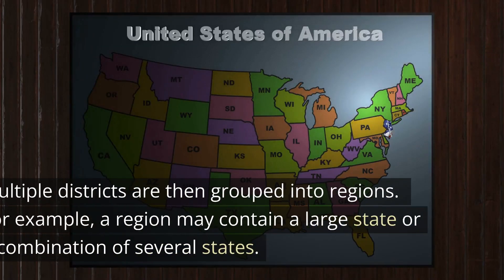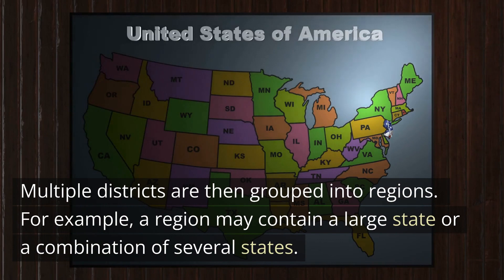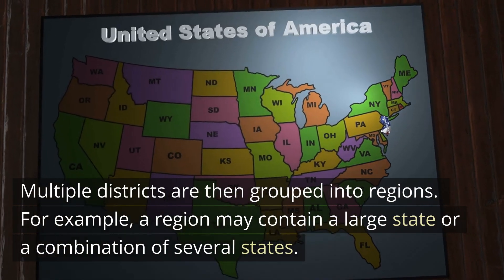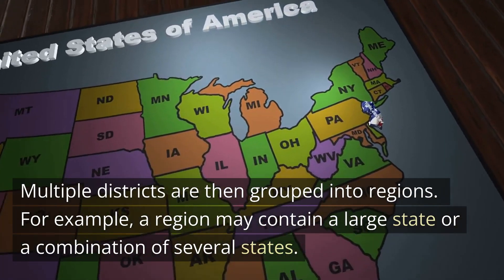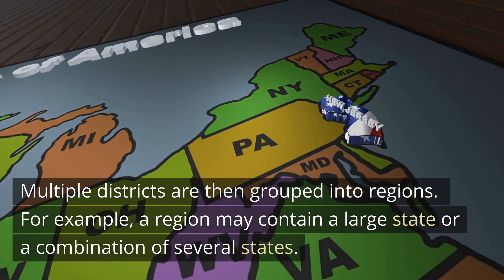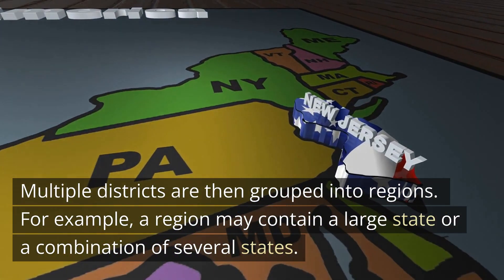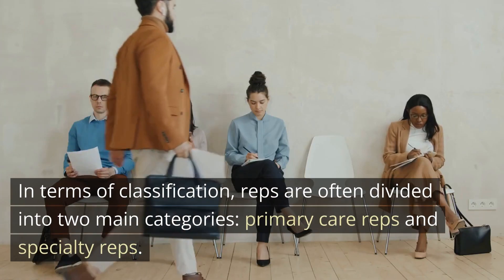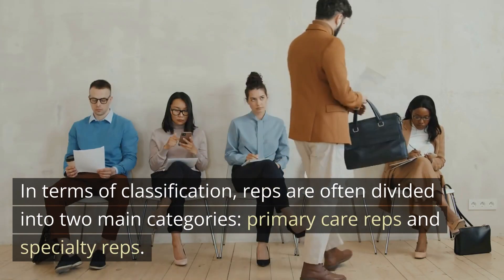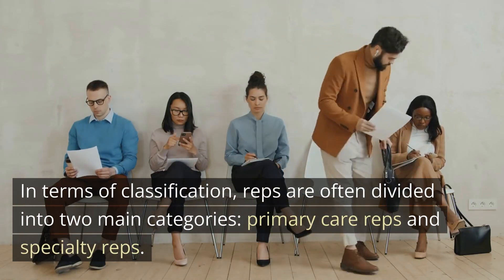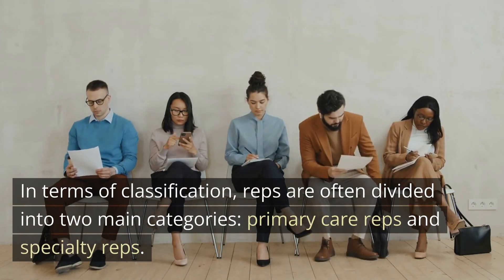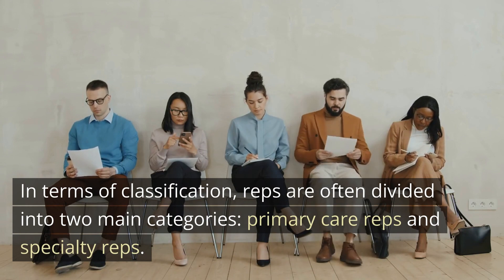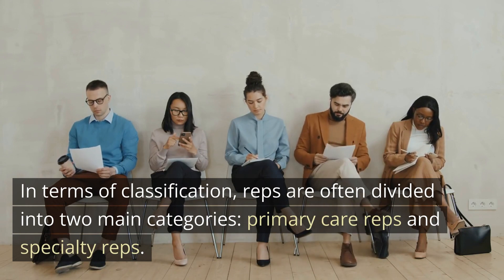Multiple districts are then grouped into regions. For example, a region may contain a large state or a combination of several states. In terms of classification, reps are often divided into two main categories: primary care reps and specialty reps.